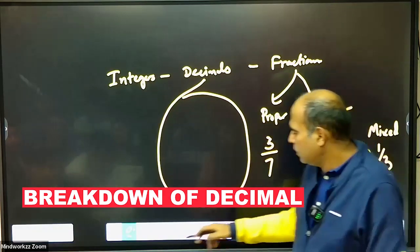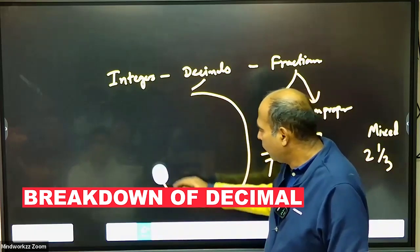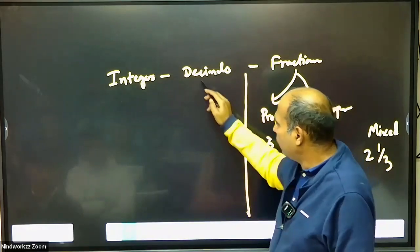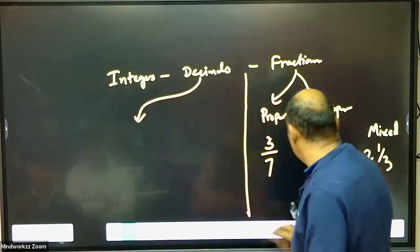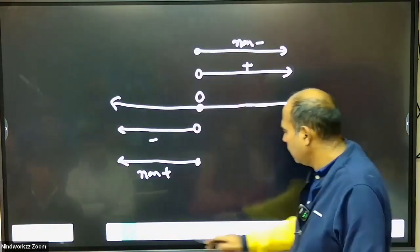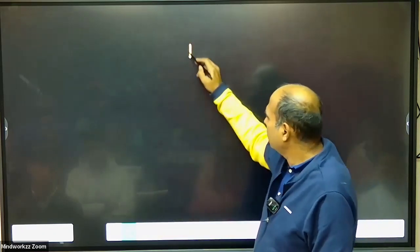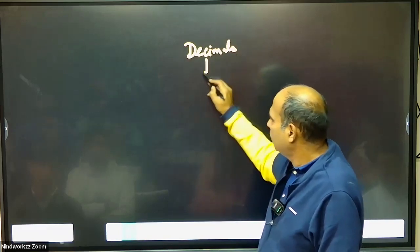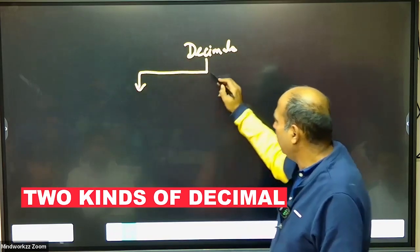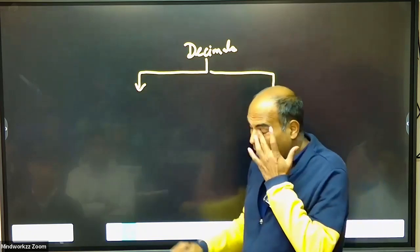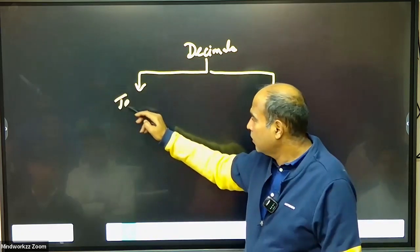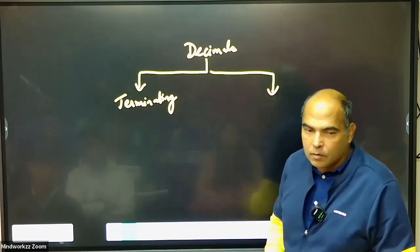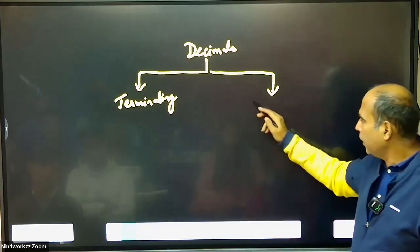Decimals have multiple types. If you look at the breakdown of decimals, they are first divided into two kinds: one is terminating decimals and the second is non-terminating decimals.